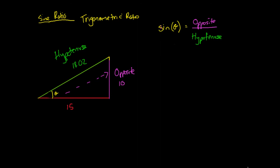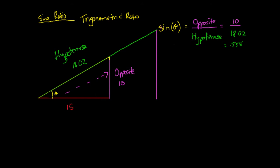What it also says is that for any triangle which has the same ratio — so a ratio of 10 divided by 18.02, which is 0.555 — then the angle will be the same. You can see this graphically: if we extend the side and double the length of both sides, so the hypotenuse is now doubled and the opposite side is now doubled, we scale up the triangle by 2. The new hypotenuse is 36.04 and the opposite is 20, but the angle is still the same.